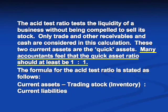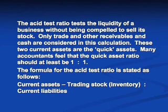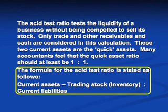Only trade and other receivables and cash are considered in this calculation — these are the quick assets. Many accountants feel the quick asset ratio should be at least one to one. The formula for the acid test ratio is current assets minus trading inventory, divided by current liabilities.